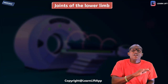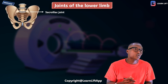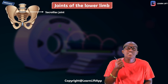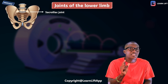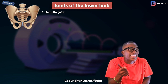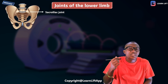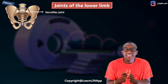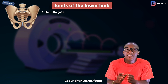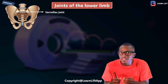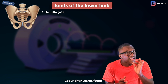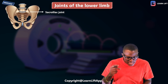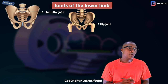Now let us list the joints of the lower limb. Number one is the sacroiliac joint, found in the gluteal region — the bony pelvis. It connects the sacrum and the ilium. The sacrum is part of the vertebrae, and the ilium is the first part of the hip bone. The hip bone consists of the ilium, the ischium, and the pubis.